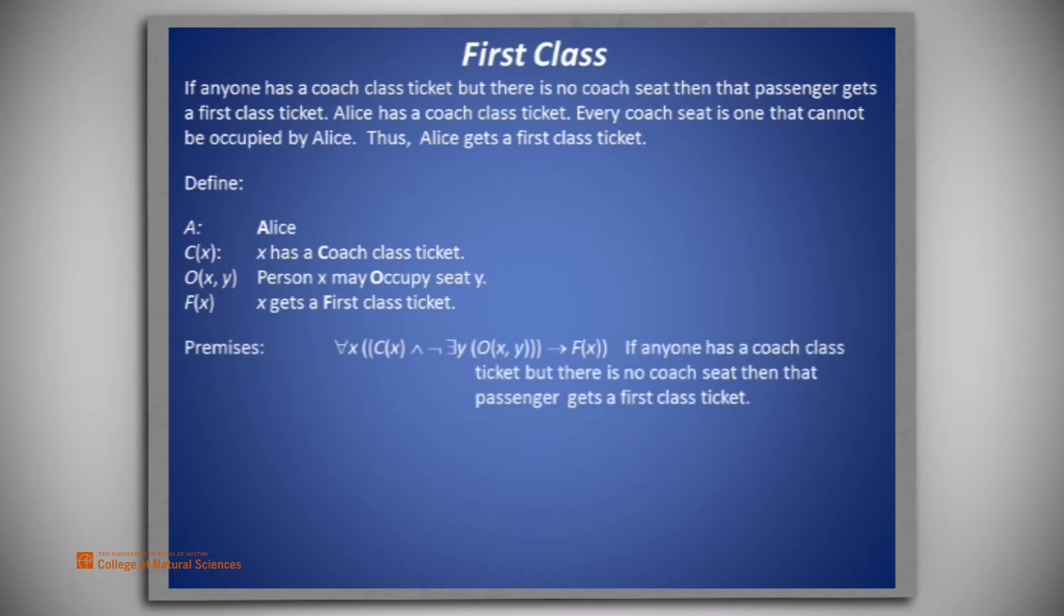The premises are these. For all x, C(x) and not there exists y, such that O(x, y), imply F(x). If anyone has a coach class ticket, but there is no coach seat, then that passenger gets a first class ticket. C(A), Alice has a coach class ticket. For all y, not O(A, y). Every coach seat is one that cannot be occupied by Alice.